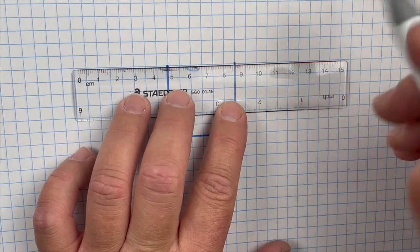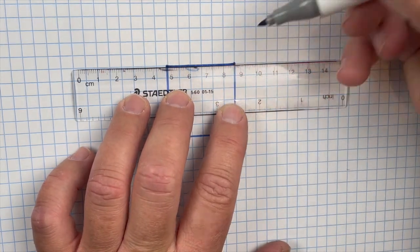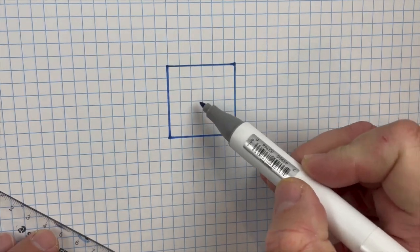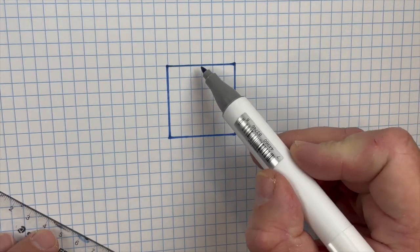You can use pencil, you can use pen, you can use marker. I chose to use a blue marker, because that way our dark shadows will pop off better.